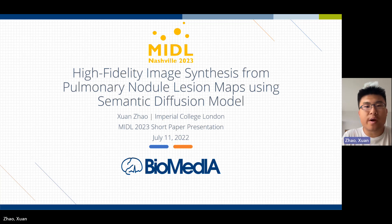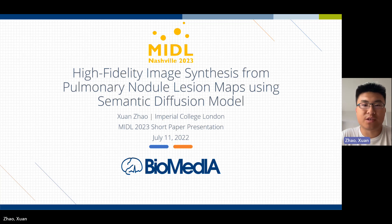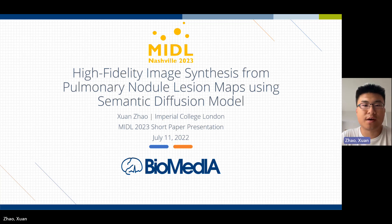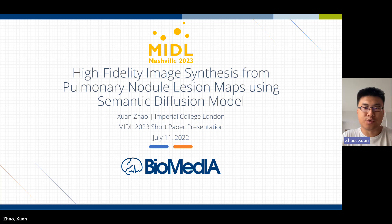We then train the semantic diffusion model to generate synthetic 2D pulmonary CT slices, and evaluate two downstream tasks with and without the mixture of synthetic and real samples. The two tasks are nodule detection and localization, both using the MM pre-trained framework to set up and train.